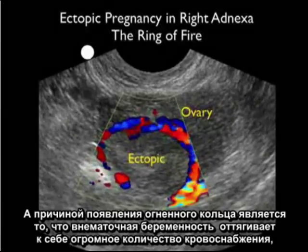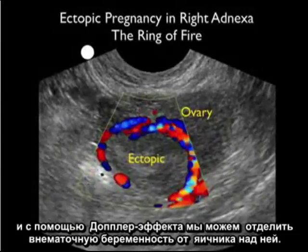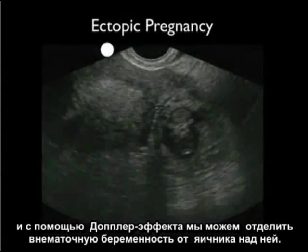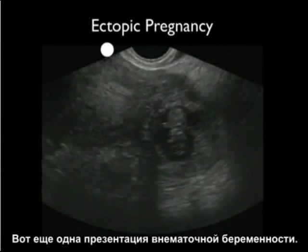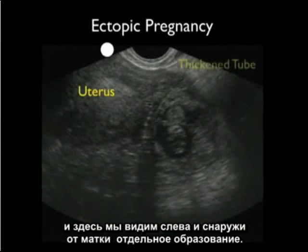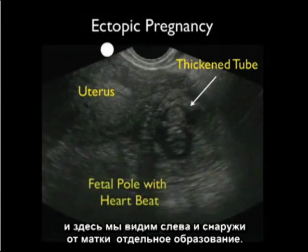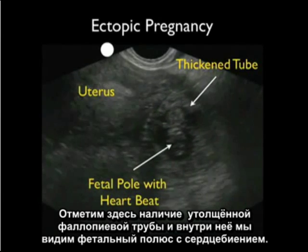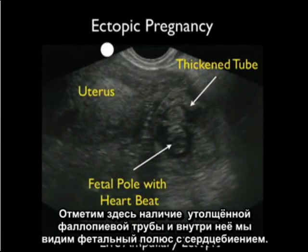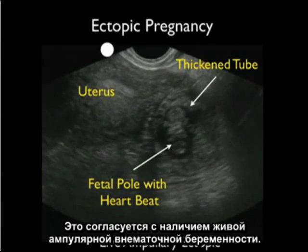The reason for the ring of fire is that the ectopic pregnancy pulls a large amount of vascularity towards it, and using Doppler we can separate the ectopic from the ovary above it. Here's another presentation of an ectopic pregnancy. Scanning in a short-axis plane, we see the uterus to the left and outside the uterus a separate structure. We note the presence of a thickened fallopian tube, and inside it we see a fetal pole with a heartbeat, consistent with a live ampullary ectopic pregnancy.